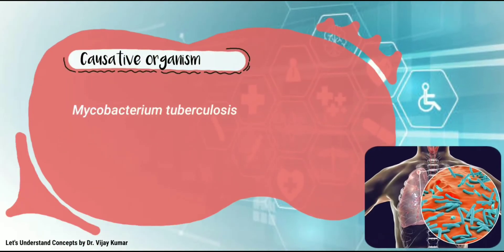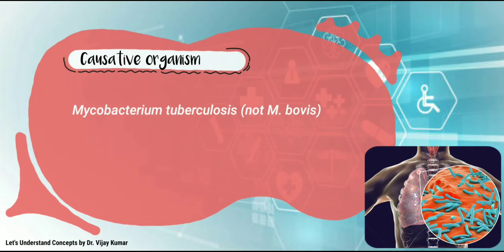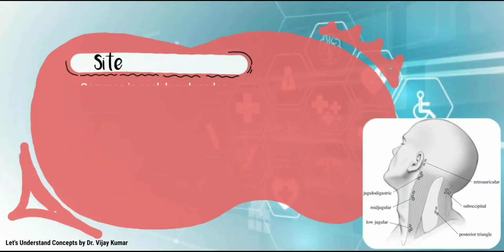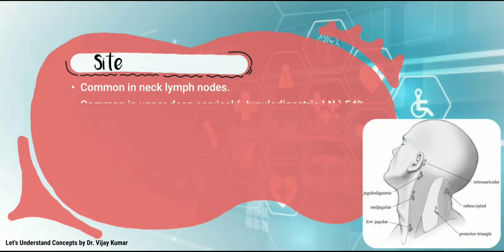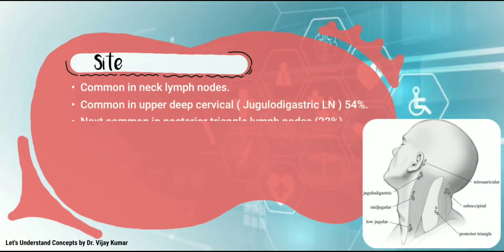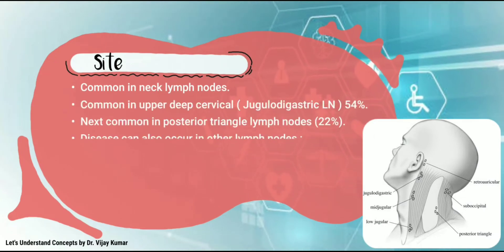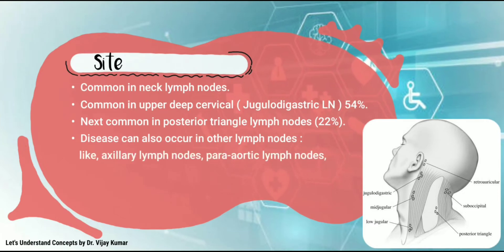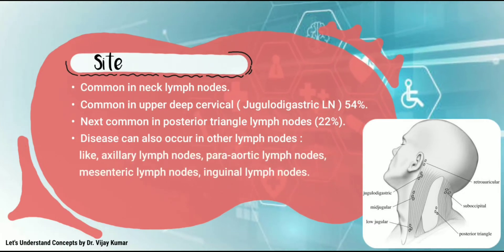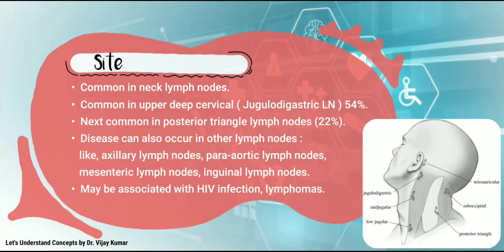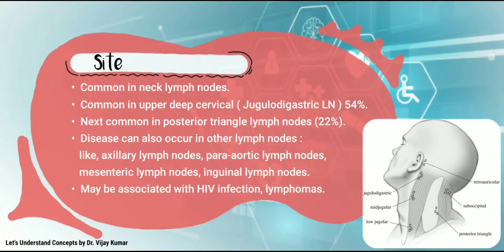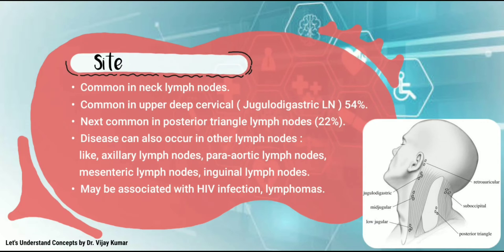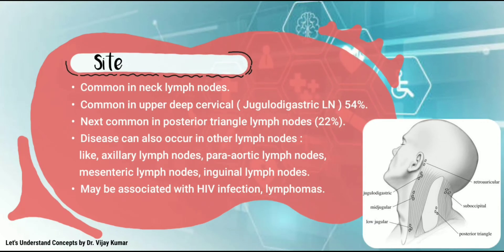The causative organism is Mycobacterium tuberculosis, not Mycobacterium bovis. The disease is common in neck lymph nodes, particularly the upper deep cervical jugulodigastric lymph nodes at 54%. The next most common site is posterior triangle lymph nodes at 22%. Disease can also occur in axillary, parotid, mesenteric, and inguinal lymph nodes.